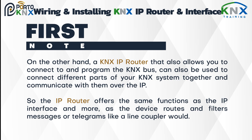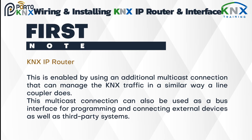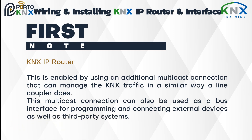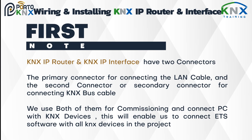On the other hand, a KNX IP router also allows you to connect to and program the KNX bus, and can be used to connect different parts of your KNX system together and communicate over IP. The IP router offers the same functions as the IP interface and more, as it routes and filters messages or telegrams like a line coupler would. This is enabled by using an additional multicast connection that can manage KNX traffic similarly to a line coupler, and can also be used as a bus interface for programming, connecting external devices, and third-party systems.